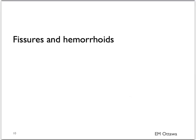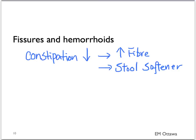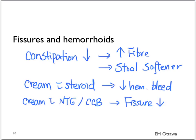Lastly, for fissures and hemorrhoids, these tend to bleed during bowel movement and are made worse by constipation. We can decrease constipation by increasing fiber intake and giving the patient a stool softener. Cream with steroid can decrease the amount of bleeding for internal hemorrhoids. Interestingly, cream with nitroglycerin or calcium channel blockers such as diltiazem have been shown in studies to decrease fissures. Both fissures and hemorrhoids tend to have a small amount of lower GI bleed that tends to resolve on its own.